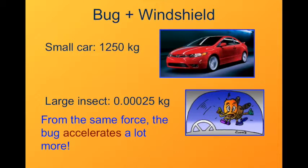So if there's a million times more mass in the car, there's going to be a million times more acceleration on the bug. That's why the bug comes out of this interaction quite a bit the worse than the car does.